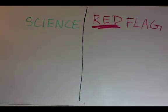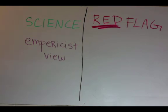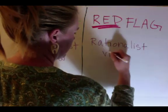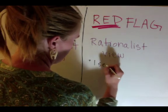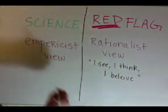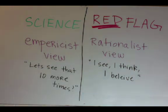Science uses the empiricist view, whereas pseudoscience uses the rationalist view. In the rationalist view, if you reason something, then it must be true. But in the empiricist view, you must have empirical evidence for something to be considered true.